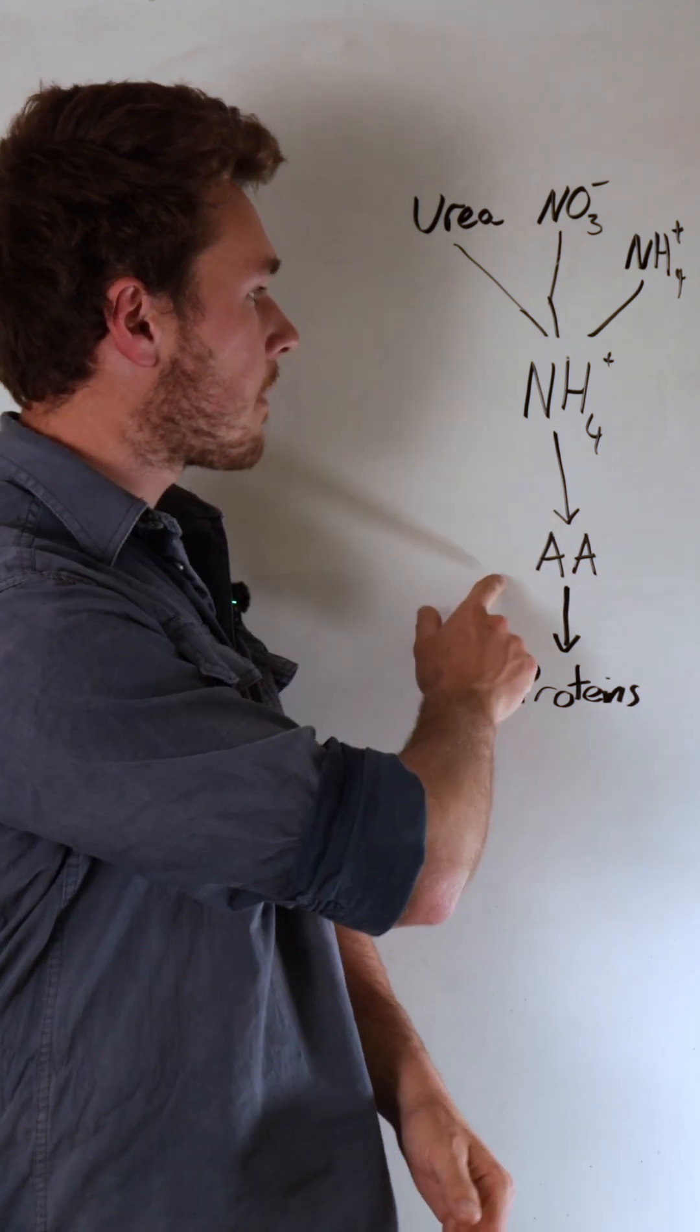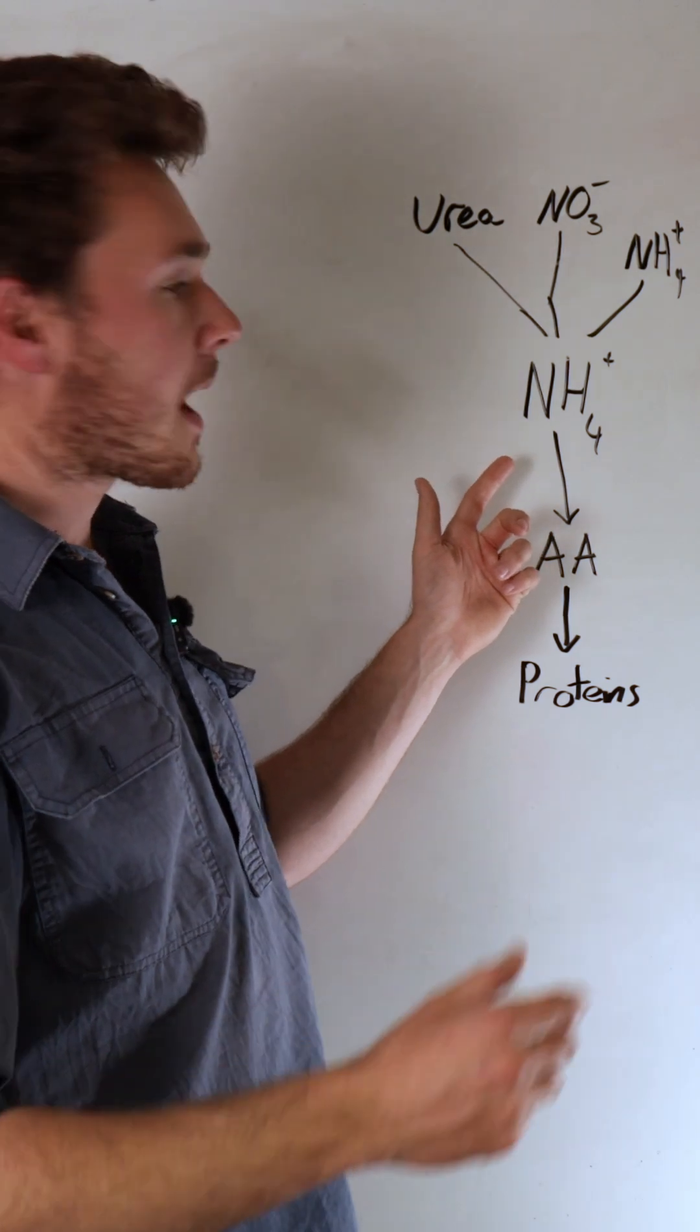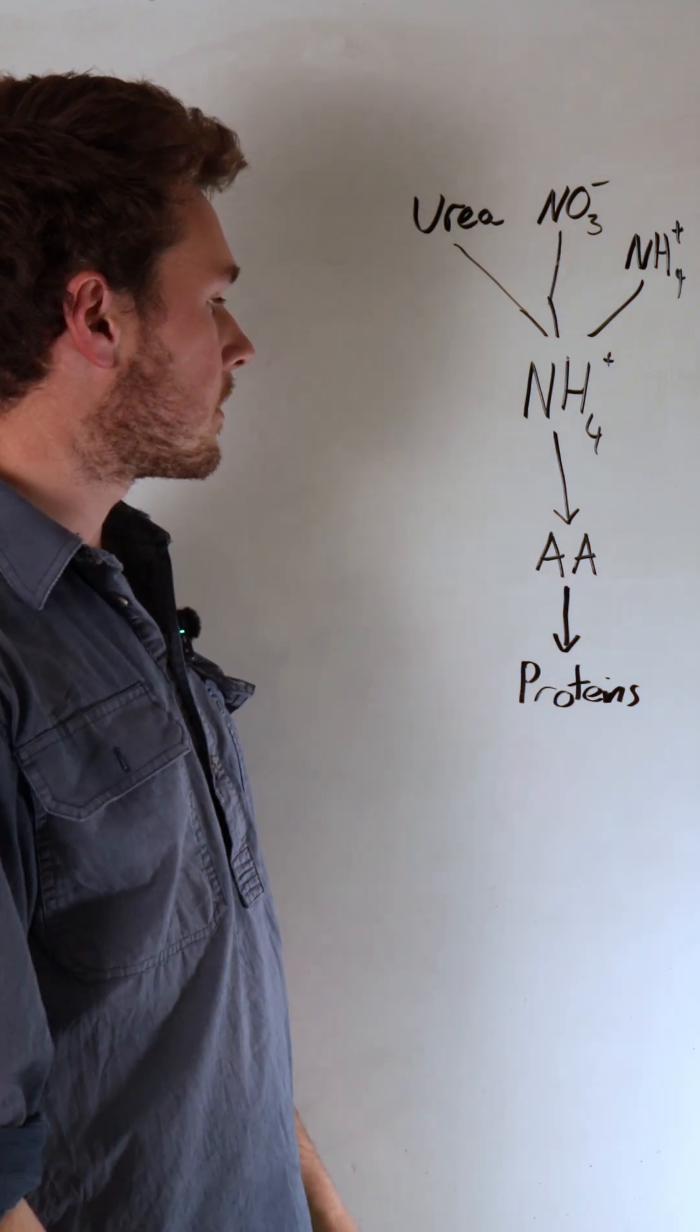Another really important thing for this step is you need sugars or photosynthates in order for there to be a carbon backbone for that ammonium to be attached onto to form your amino acids.